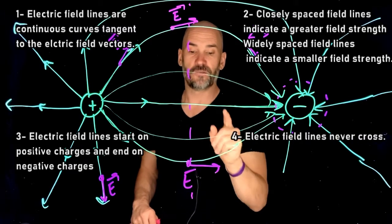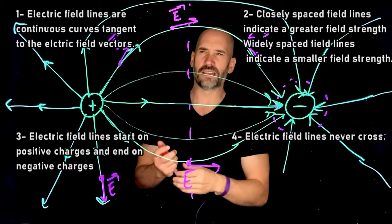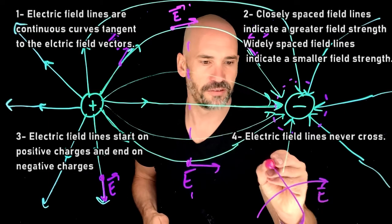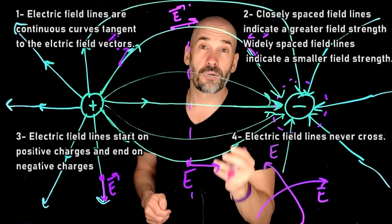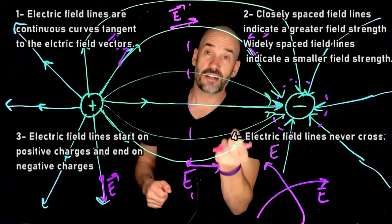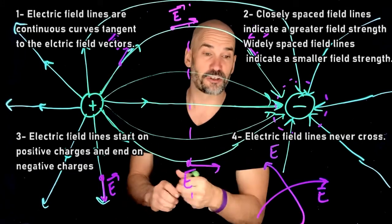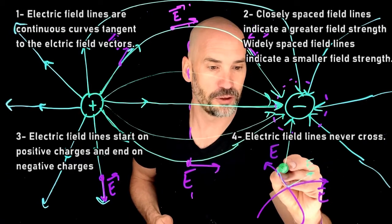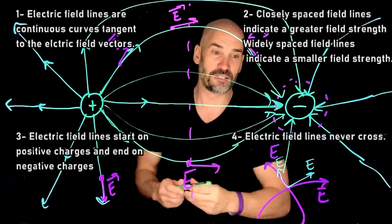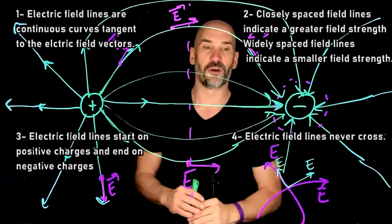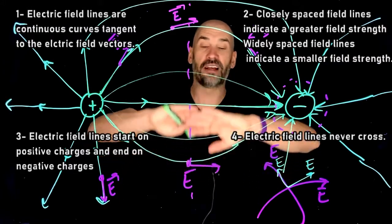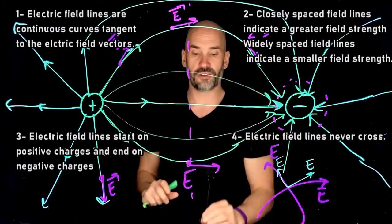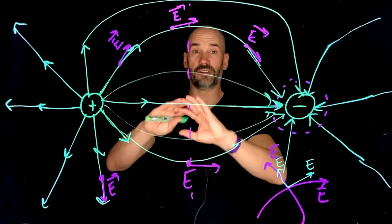And rule number four, super important, electric field lines never cross. Why is that? What would it mean if an electric field line crossed? Well, remember, so let's say I have an electric field line here, and I have another electric field line here. Remember, I said that the electric field is tangent to the electric field line. So if electric field lines crossed, that would mean that there would be one electric field pointing this way, and one electric field pointing this way. And that's impossible, I could be confused, the electric field would be all confused. It wouldn't know what to do. So just know that net electric field, the electric field lines of the net electric field never cross each other. And that's it. Those are the four rules of electric field lines.